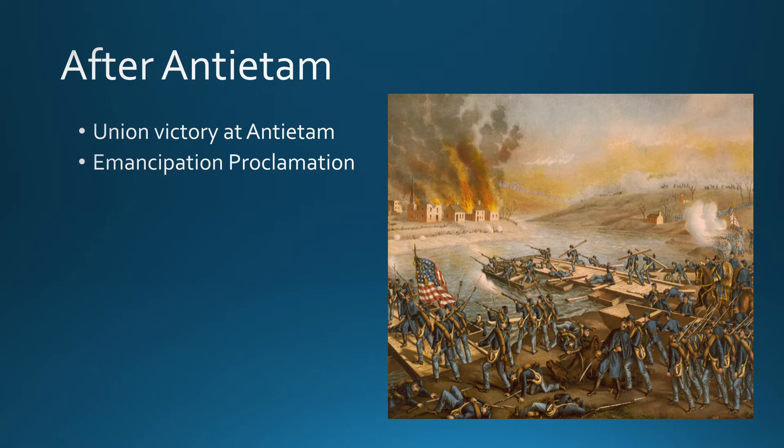It's against the backdrop of Antietam that Lincoln issued the Emancipation Proclamation. This freed slaves in all the rebelling states, which is significant in itself. But the bigger takeaway is that this was pretty crushing for the Confederacy because it meant that no foreign intervention would come in on their side. Britain or France were not going to involve themselves in a war on slavery — certainly not on the side that supports slavery.